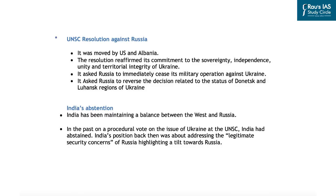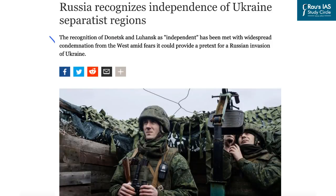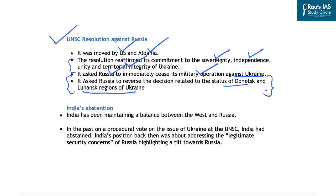The UNSC resolution was brought against Russia for its attack on Ukraine. This resolution was moved by the US and Albania. It reaffirmed commitment to the sovereignty, independence, unity, and territorial integrity of Ukraine, asked Russia to immediately cease its military operations, and asked Russia to reverse its decision recognizing Donetsk and Luhansk as independent republics. India abstained from voting on this resolution, while Russia used its veto power to prevent the resolution from being accepted and implemented.